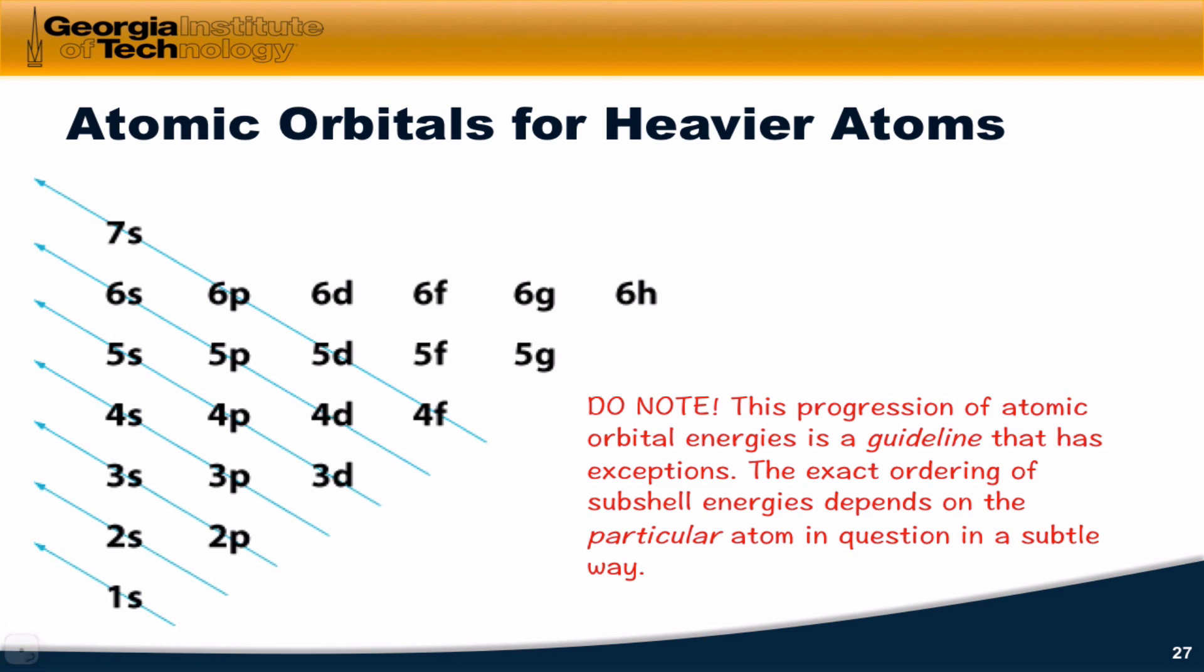So while it's a useful guideline to think of the energies of the atomic orbitals in this way, it's just a guideline. And you will see exceptions, particularly within the transition metals for electron configurations of the heavier atoms. That's just about all I'll say about it here, other than to note that this figure is one that's commonly used to kind of build up the scaffold from lowest to highest energy.